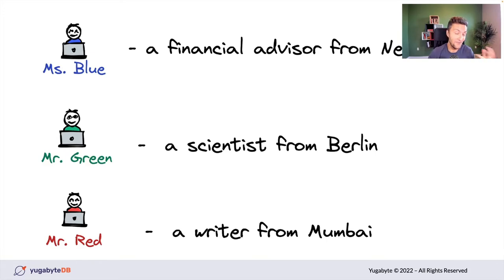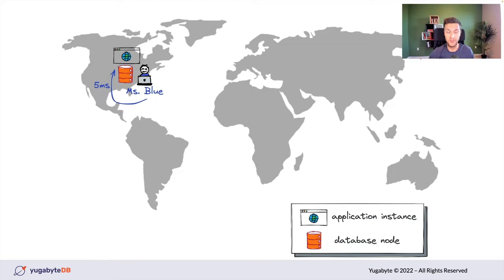I've got the first three users of my application — friends from college who live in different places on different continents. Please welcome Mrs. Blue, a financial advisor from New York; Mr. Green, a scientist from Berlin in Europe; and Mr. Red, who moved to Mumbai and is a professional writer. For Mrs. Blue who lives in New York, the latency will be extremely low — as low as 5 milliseconds — because she's near the US East region where the application and database are deployed.